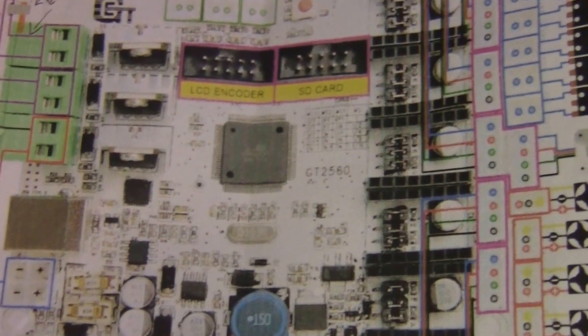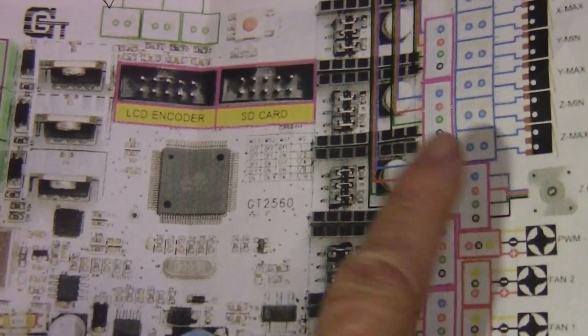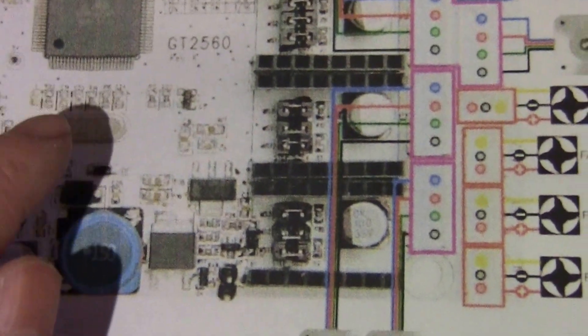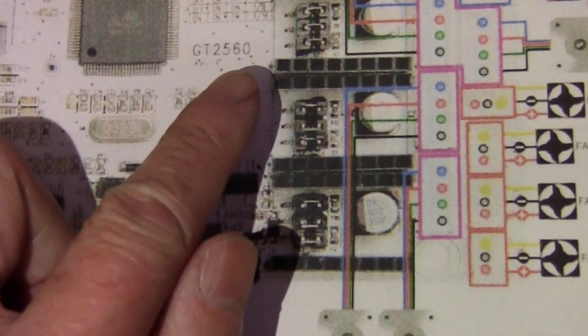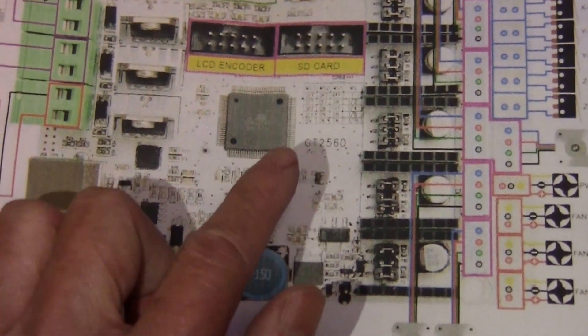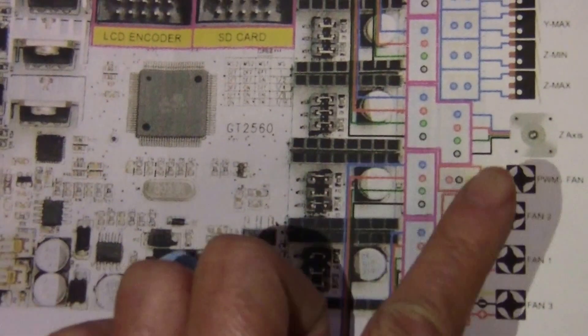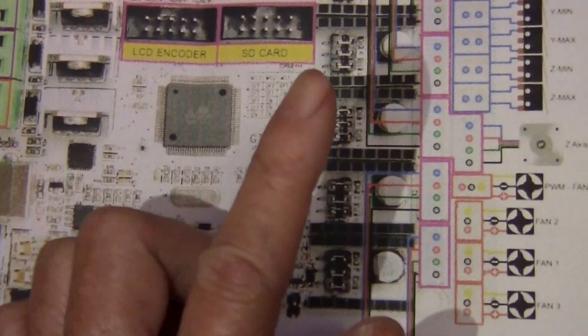The PDF that came with the printer did not have the connectors clearly marked, so I went to the GTech website and got this GT2560 control board diagram. This is exactly the control board that I have over here. I was able to correct my connection mistakes, and once I did that, everything worked.